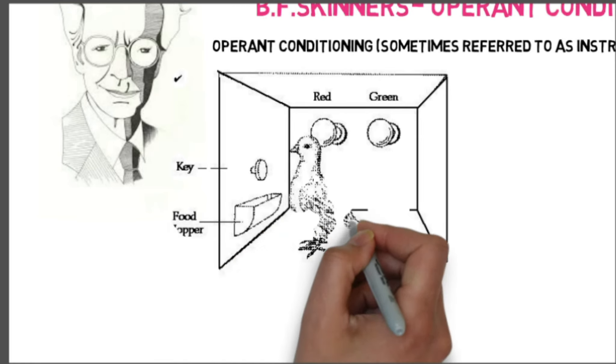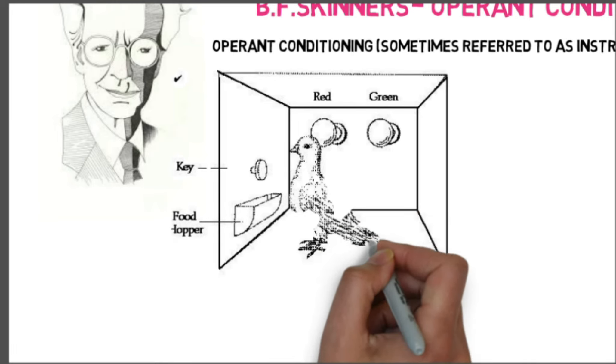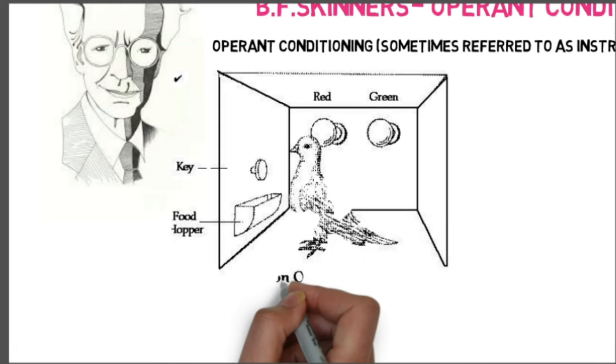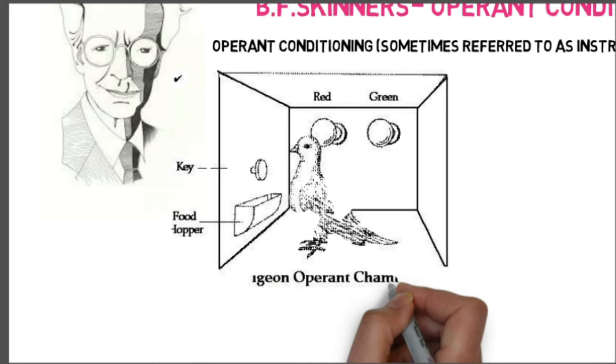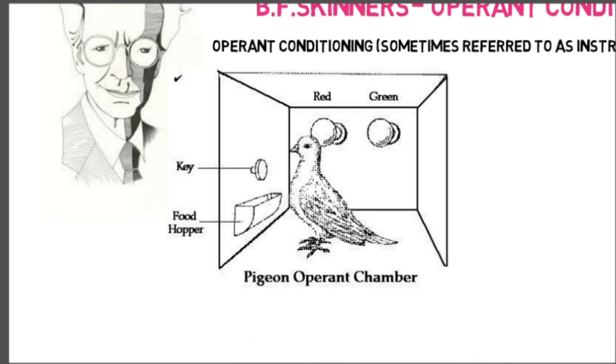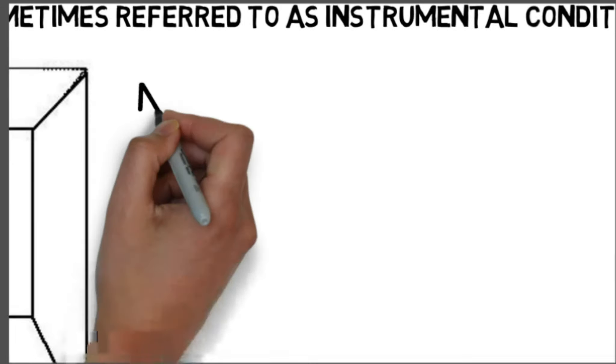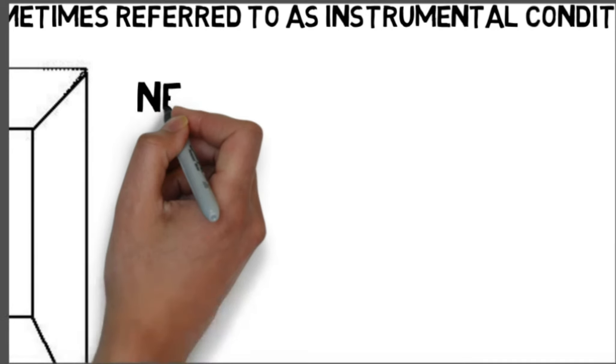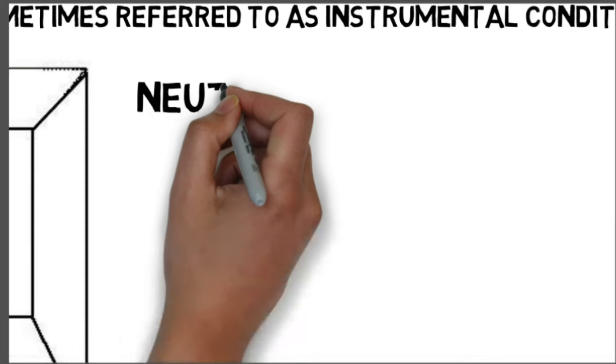There is an important difference between a reward and a reinforcer in operant conditioning. A reward is something which has value to the person giving the reward, but may not necessarily be of value to the person receiving the reward. A reinforcer is something which benefits the person receiving it, and so results in an increase of a certain type of behavior.